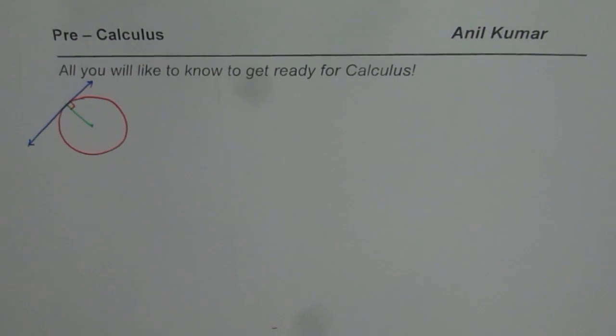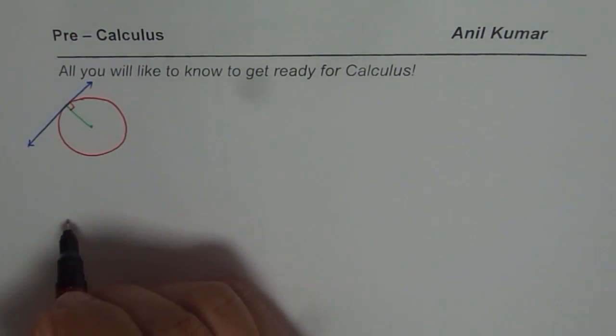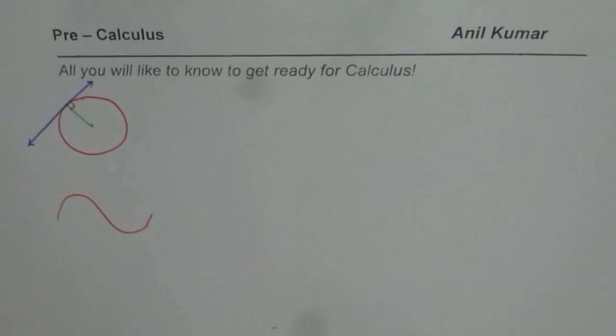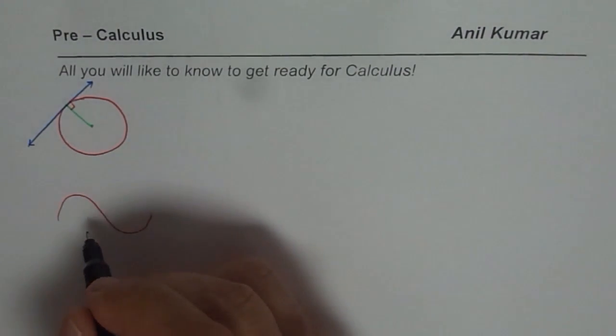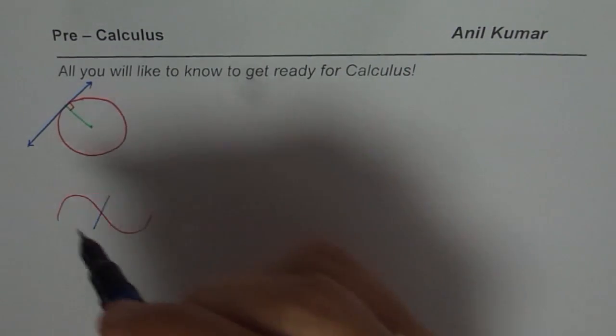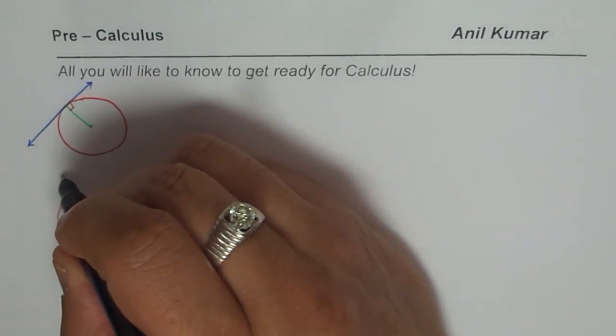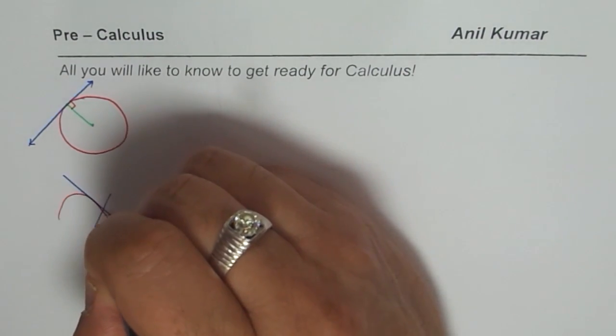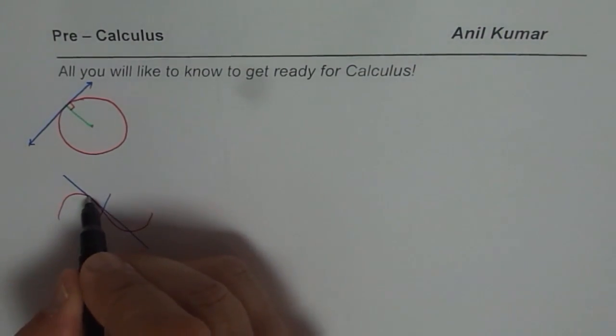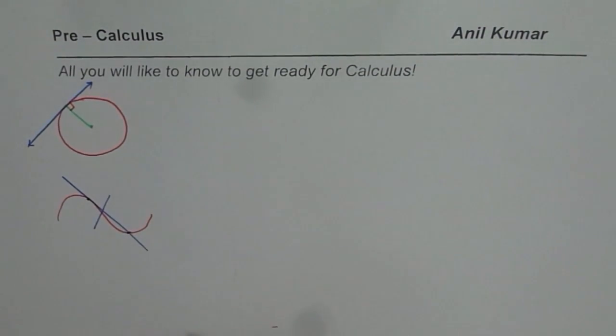But this definition really has been an easy way out so far. Now you could have a curve where the line could touch at one point and it may not be a tangent. Or you could have a curve where the tangent actually crosses at more than one point. You can see for yourself that this definition fails miserably.